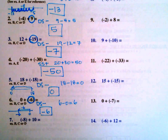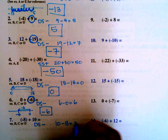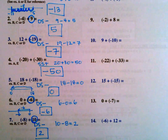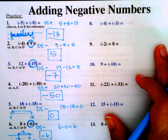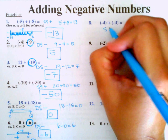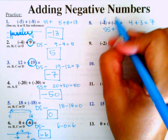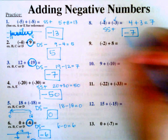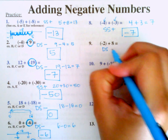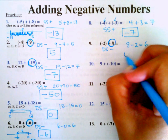Number 7: negative 8 plus 10. Different signs, so we subtract: 10 minus 8 equals 2. The larger number is positive, so the answer is positive 2. Number 8: negative 4 plus negative 3. Same sign, so we add: 4 plus 3 equals 7. Adding two negatives gives negative 7. Number 9: negative 2 plus 8. Different signs, subtract: 8 minus 2 equals 6. The larger number is positive, so the answer is positive 6.